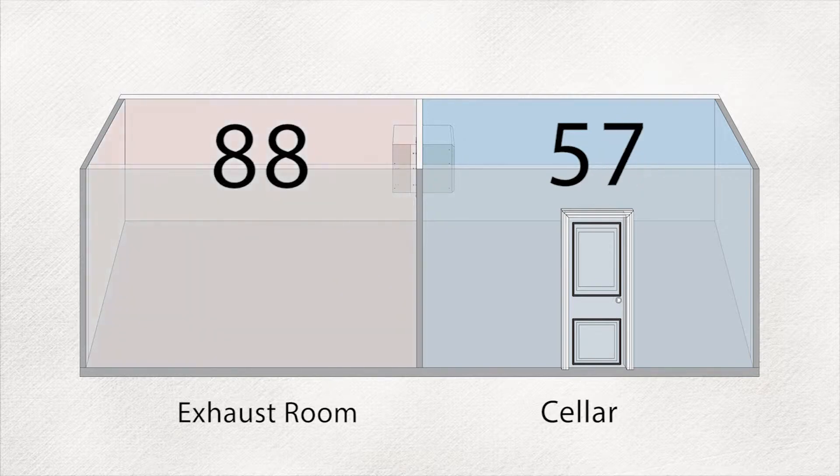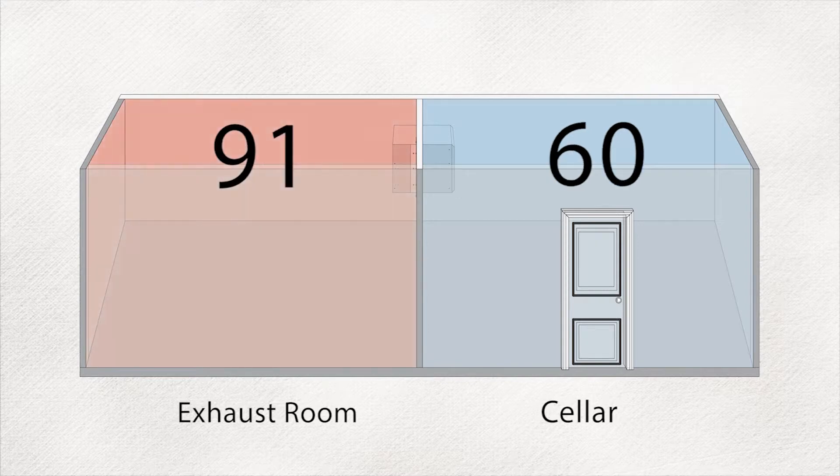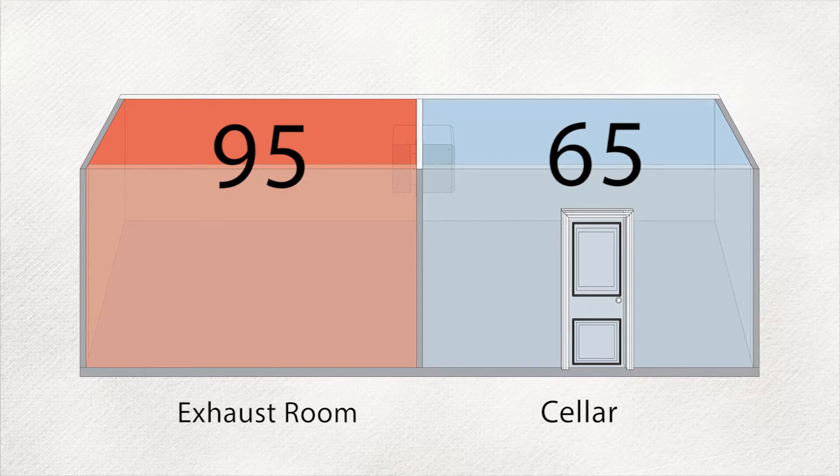If the exhaust room does exceed 85 degrees and continues to rise to 95 degrees, then the cooling system will not be able to cool the wine cellar to the optimal temperature of 55 degrees.